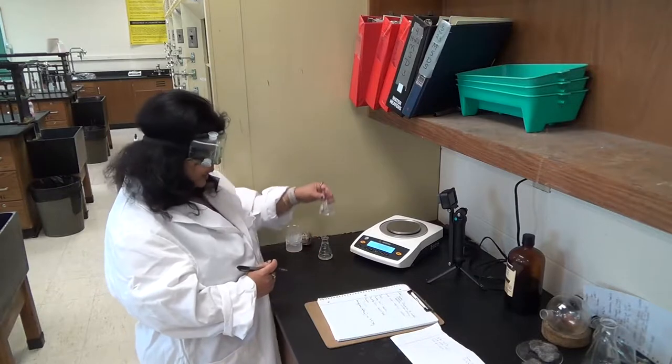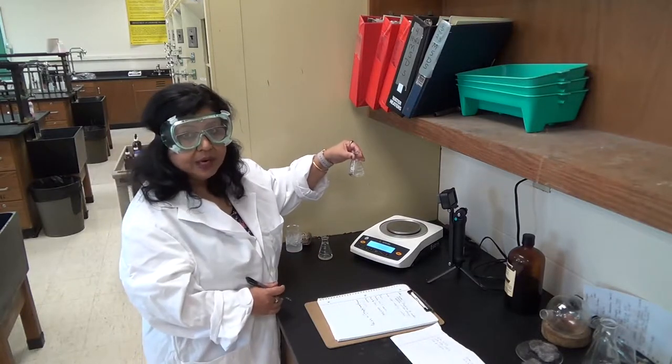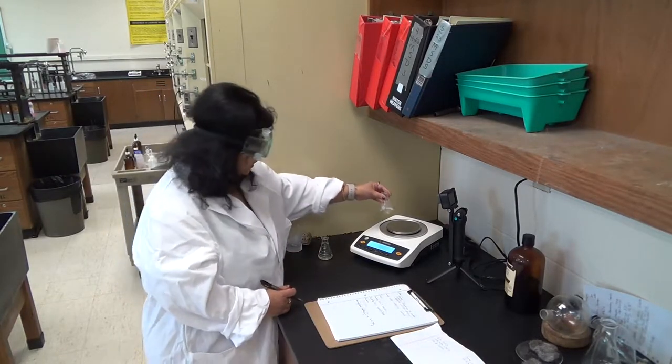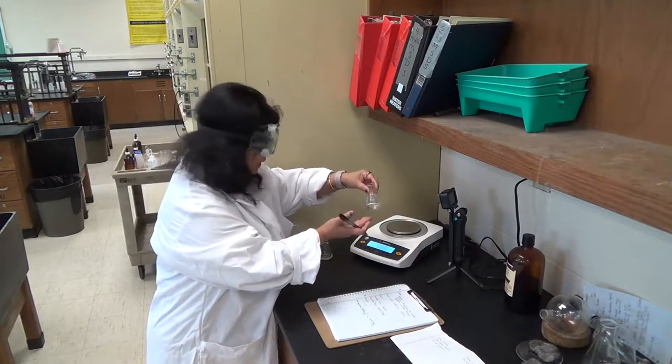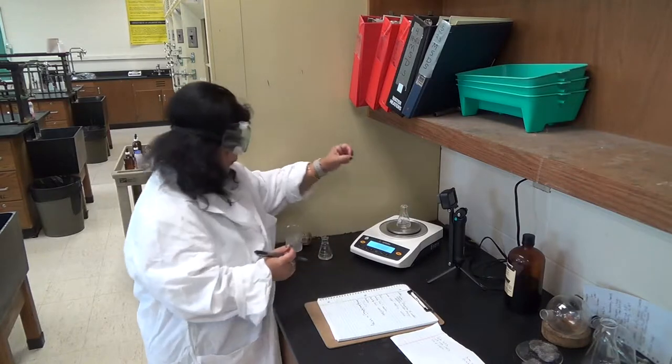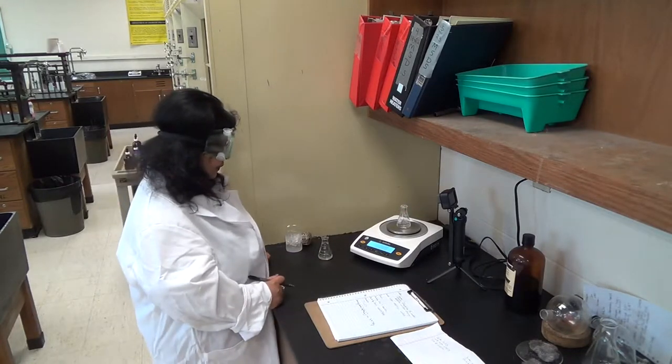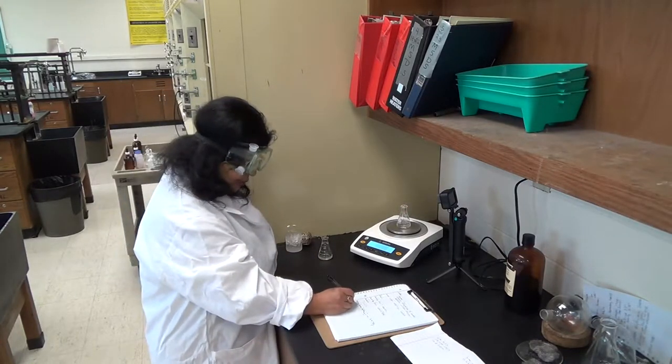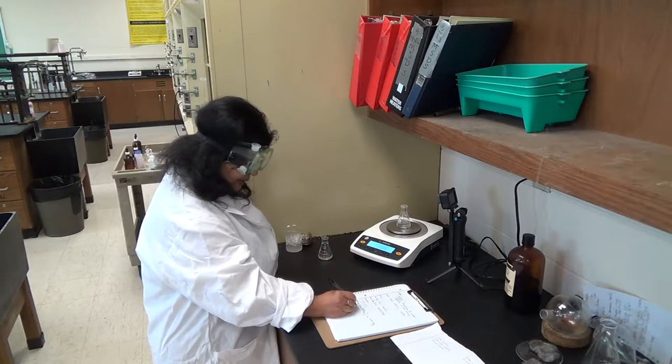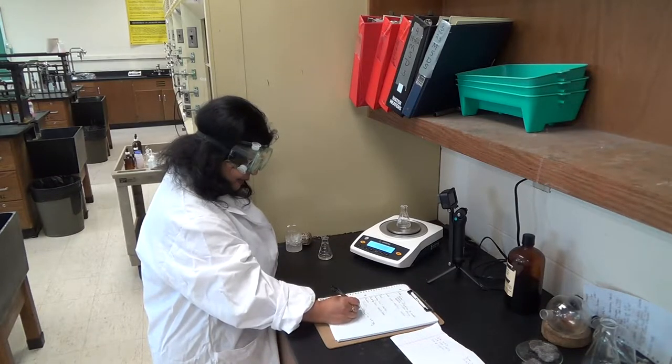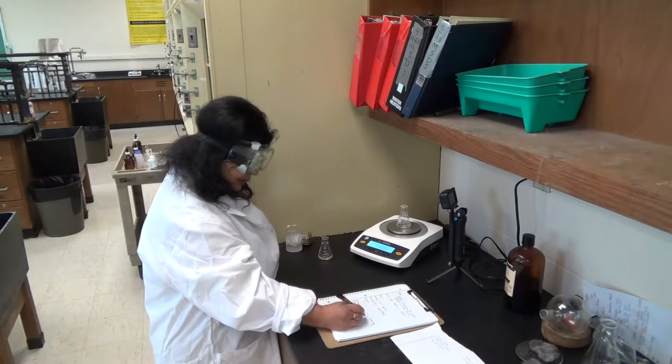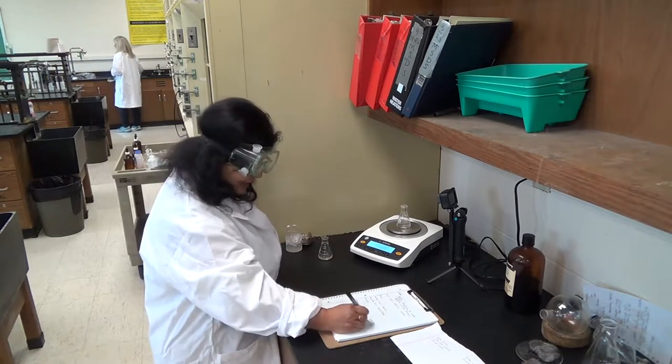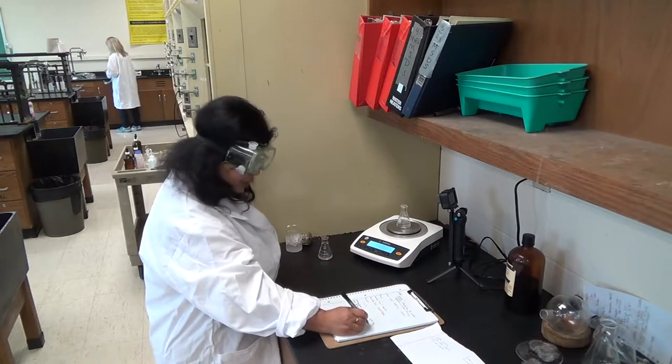So I'm going to weigh the next flask which has sodium carbonate solution. Do the same thing, make sure the bottom is dry. And this weighs, mass of the flask and sodium carbonate, it is 47.28 grams.